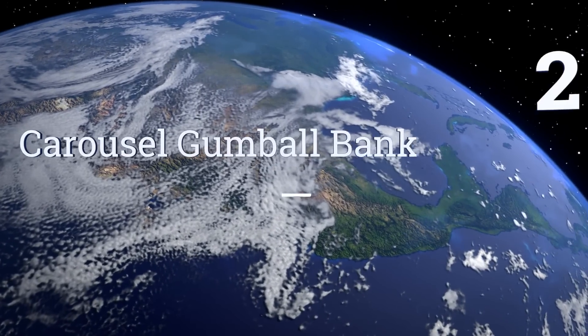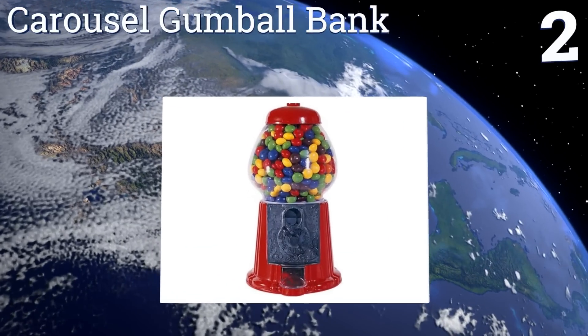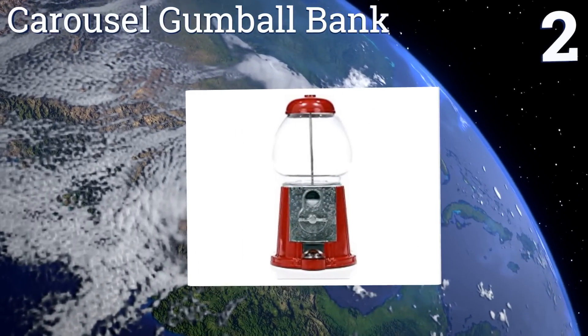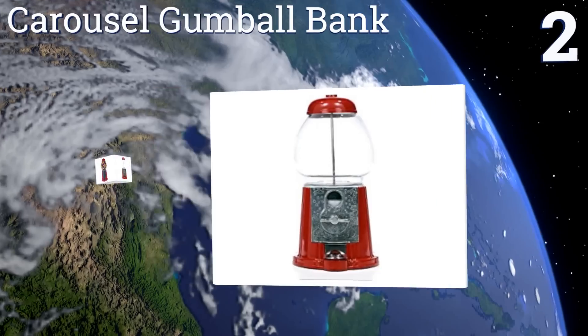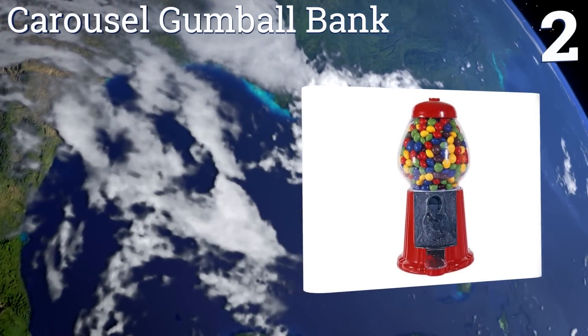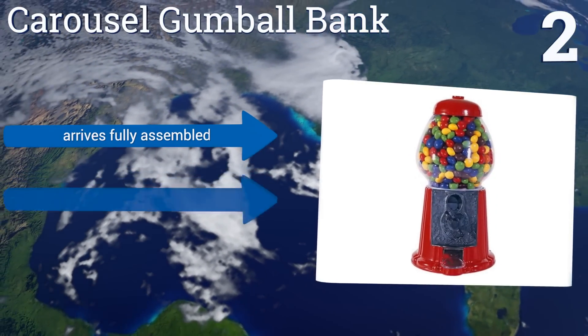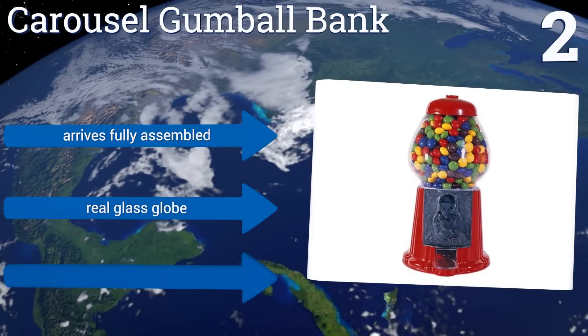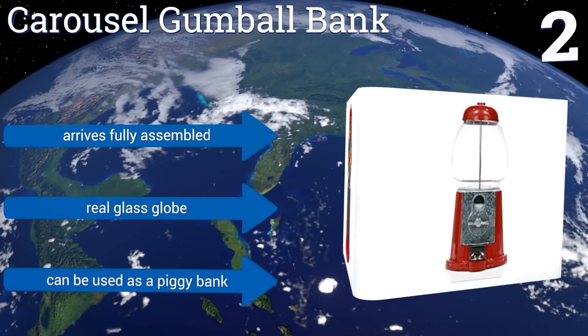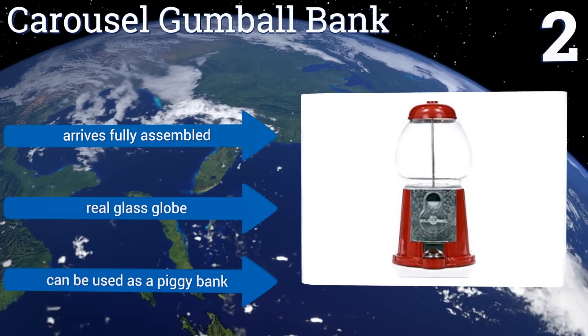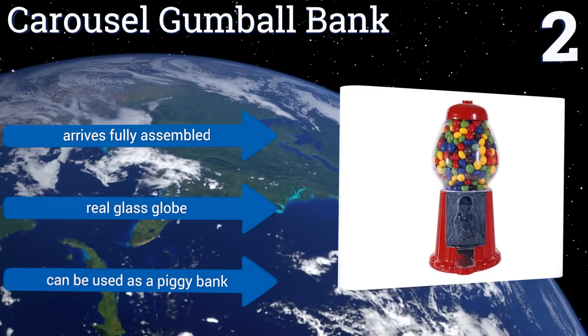At number 2, the Carousel Gumball Bank boasts a cast metal base and top in the classic fire engine red finish that you'll remember from your childhood days. Watch your kids face light up each time they insert a penny, nickel, dime or quarter and anxiously wait for their reward. It arrives fully assembled with a real glass globe. It can be used as a piggy bank too.